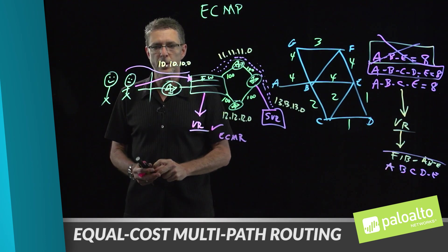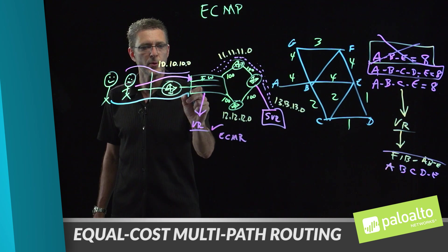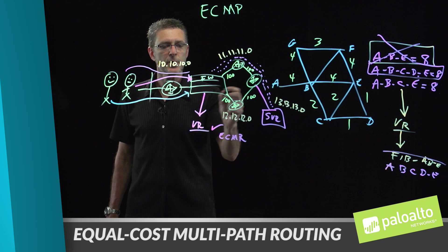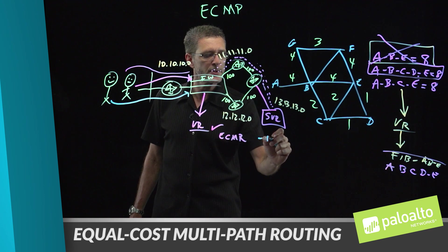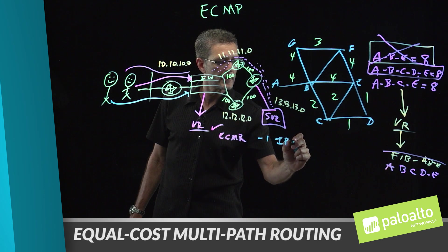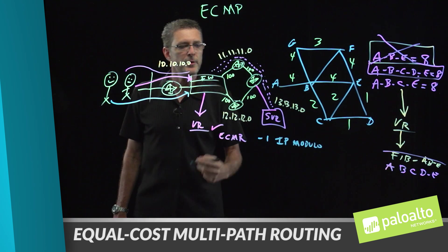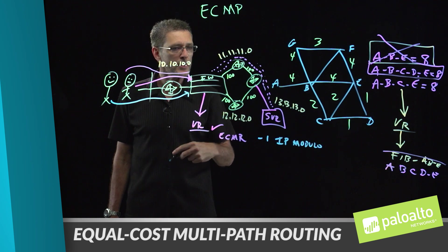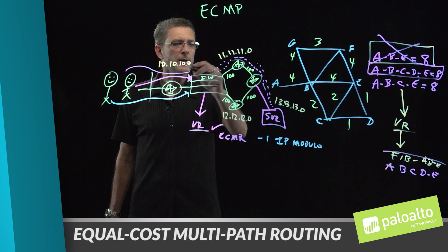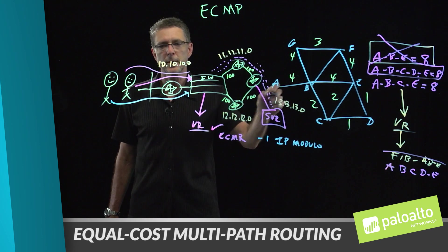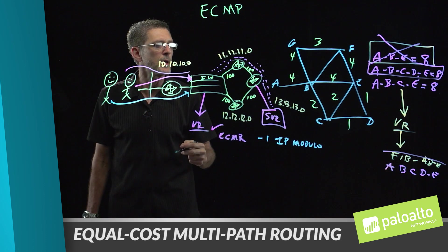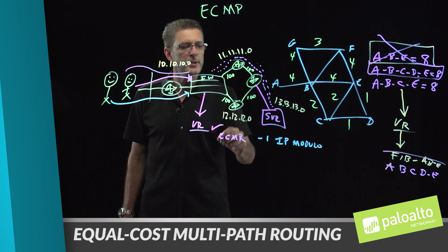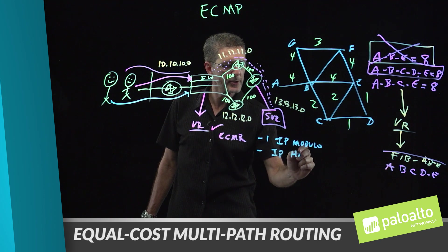When a second user also wants to connect to the same server, the firewall makes a decision on how to load balance across the links. One option is IP modulo — a simple calculation using the source and destination IP from the packet header, performing a modulus calculation to determine which link the session should be routed across. It is a relatively simplistic calculation, so if you find the distribution across your links is unequal, there is a second option: IP hash.